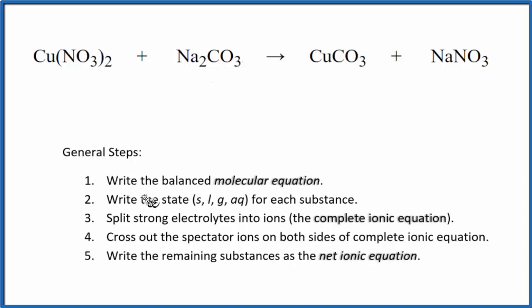So the first thing we need to do with net ionic equations is balance the molecular equation. This is the molecular equation, and it looks like if we put a 2 as our coefficient here, we'll have two sodiums, we'll have two nitrates, those are balanced, we have one copper on each side and one carbonate on each side, so that's balanced.